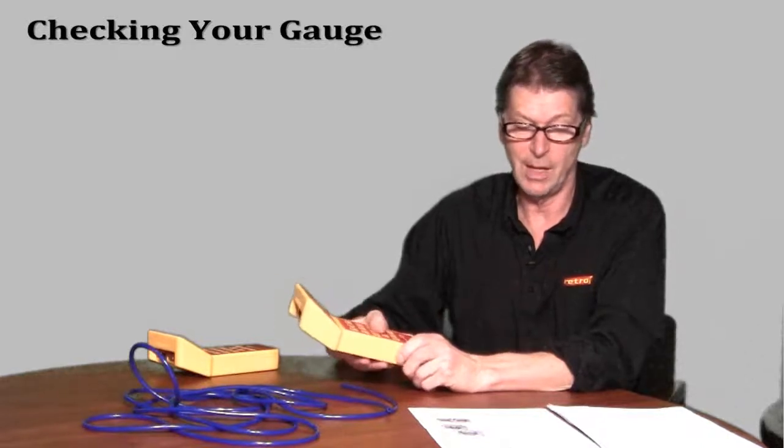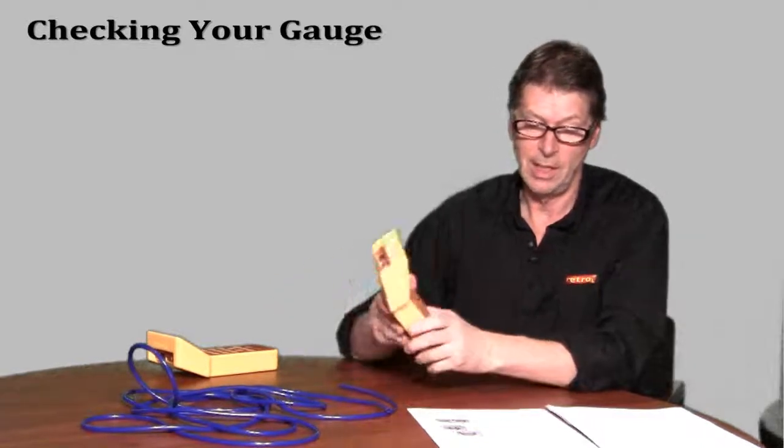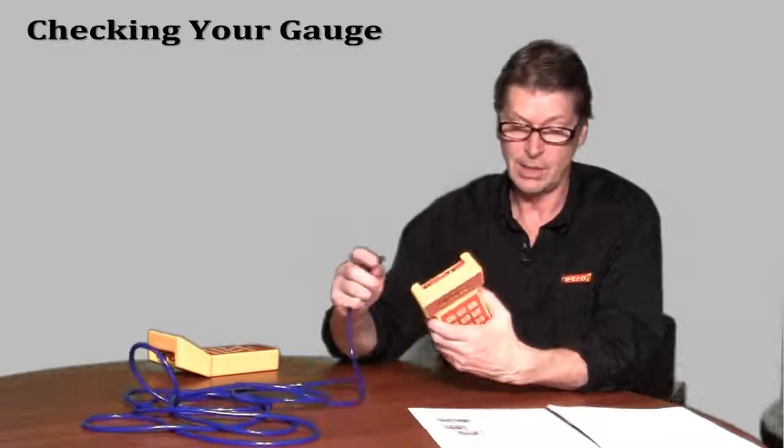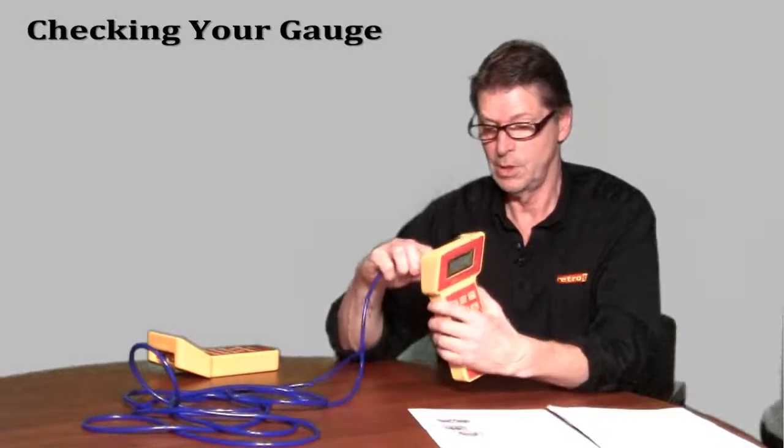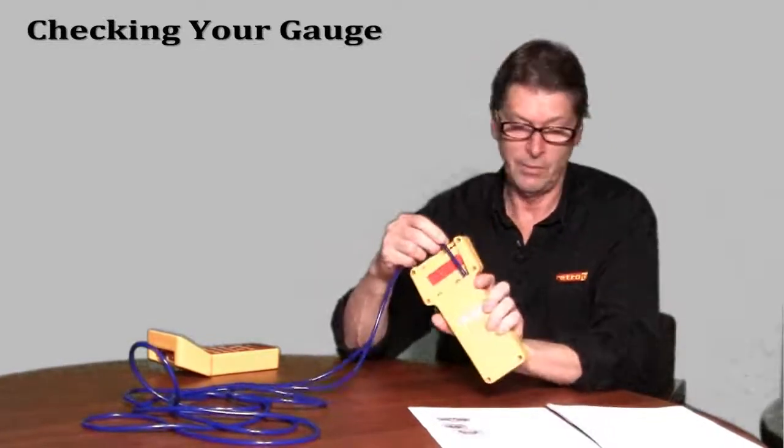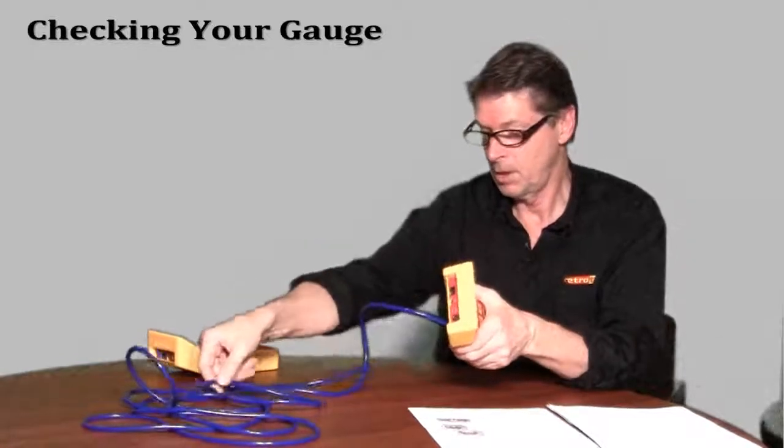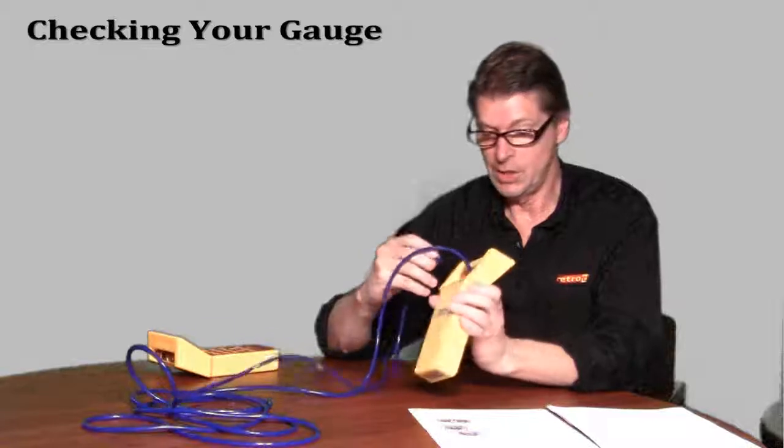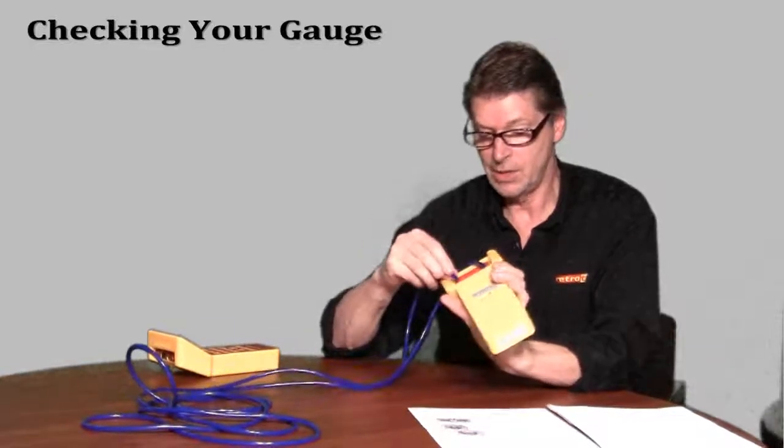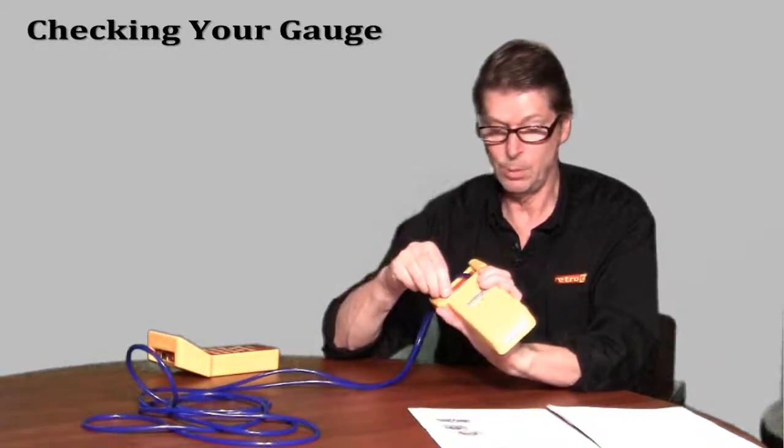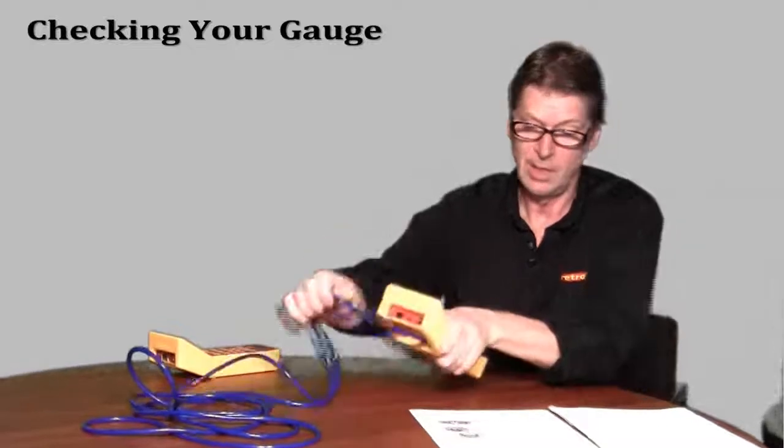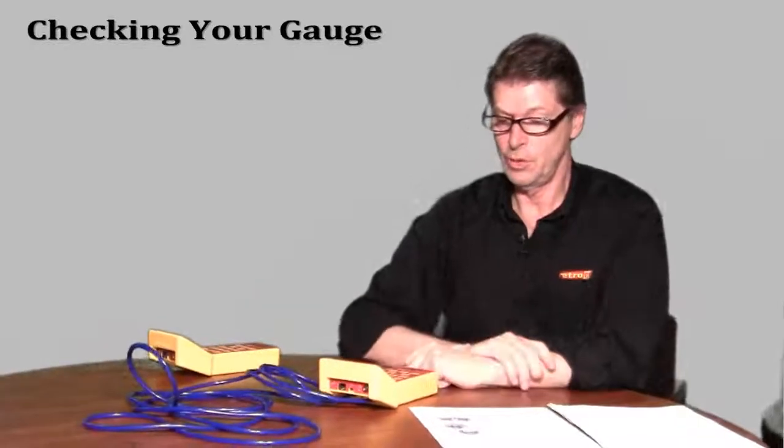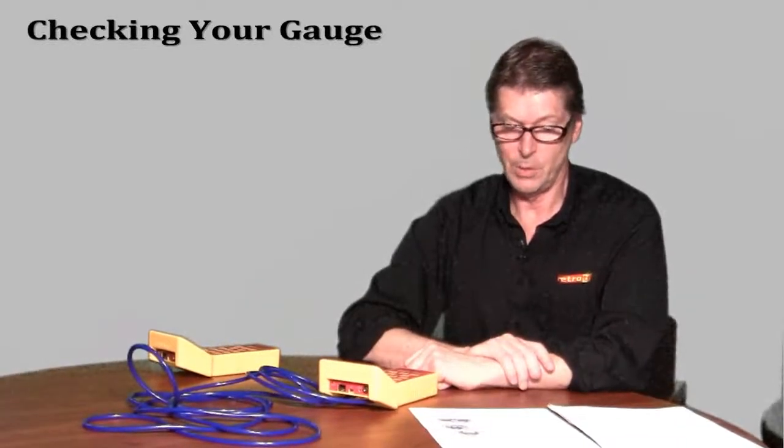We've got the time averaging set to two seconds, and we're going to connect the blue tube to the input port of channel A. Step one of the procedure is to connect the other end of that tube to the input port of channel B and to observe the difference between the two readings.